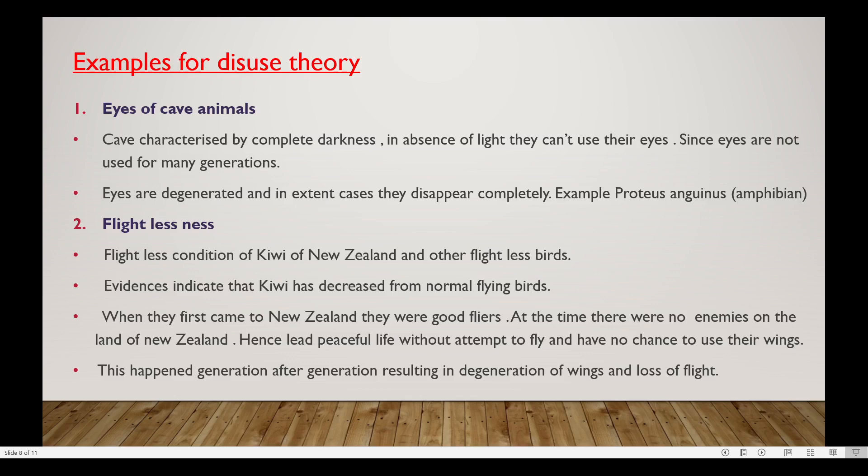Over many generations, the eyes of cave animals degenerate and eventually disappear. The example given is Proteus anguinus, an amphibian that lives in caves.